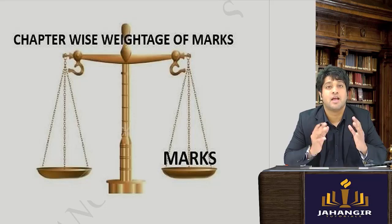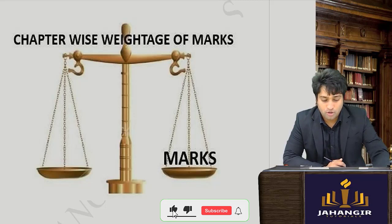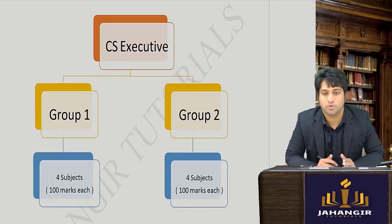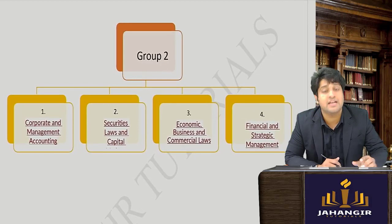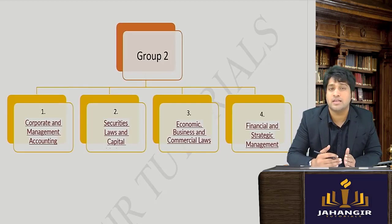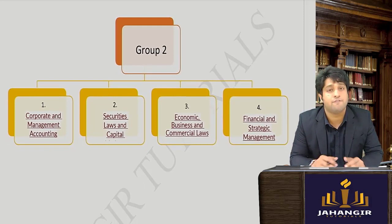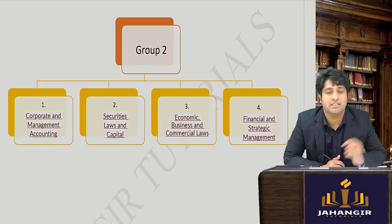This video is about the chapter-wise weightage for Group 2 subjects in CS Executive. There is Group 1 and Group 2, each having 4 subjects. For Group 1, I have already made the chapter-wise weightage and the average marks, which is valid across attempts since it is an average and doesn't vary much. Now let's talk about Group 2 and your strategy for it.